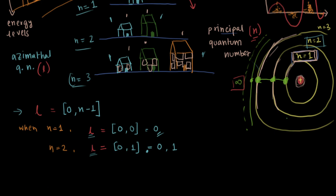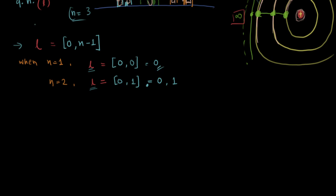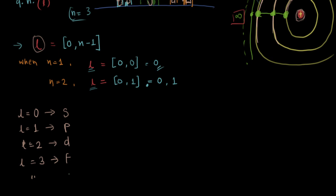Now let's get back to the SPDF stuff. The SPDF thing relates with the azimuthal quantum number L. When L equals 0, the subshell name will be S. When L equals 1, the subshell name will be P. When L equals 2, it will be D. When L equals 3, the subshell name will be F, and so on. That's how we get the SPDF names. There is an interesting story about how it got to exactly SPDF - maybe you should Google that.